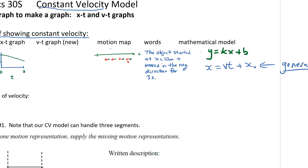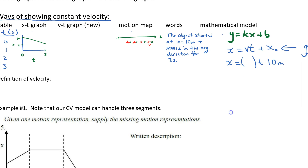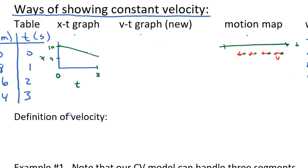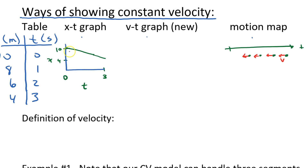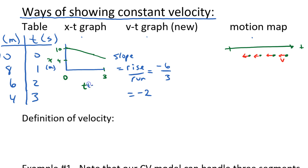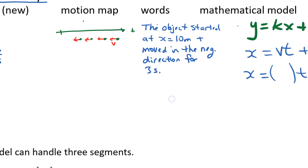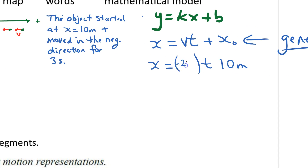Specifically, what does it look like in this situation? X is going to be where the object will be. I know it starts at 10 meters, so I'll put 10 meters in. What is the slope — what is the velocity? Looking at the graph, it's dropping: the rise is negative six and the run is three, so the slope is negative two. The units are meters over seconds, so the velocity is negative two meters per second.